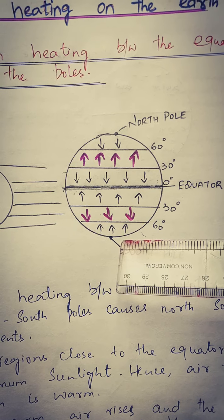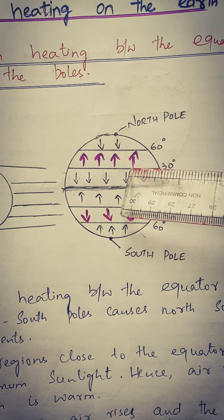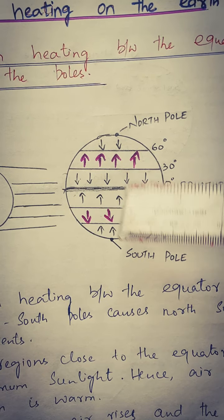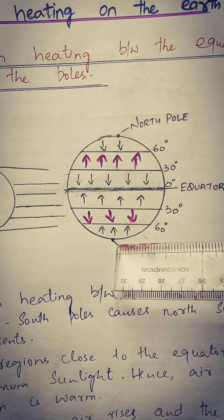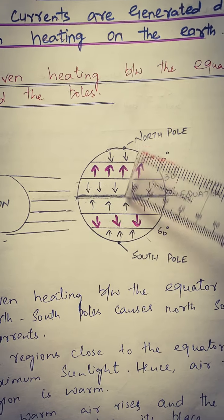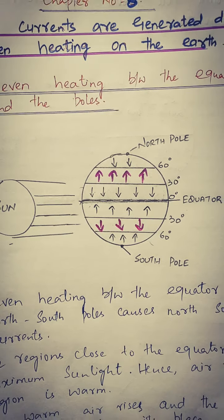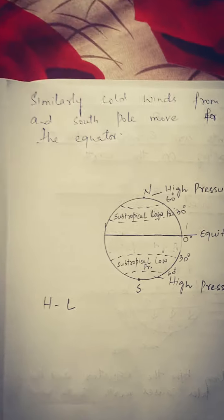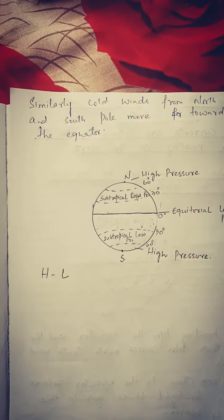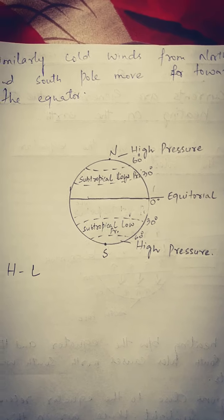Humne kal bhi padha ke warm air rise up karti hai — wo upar ki taraf jaati hai. Equator ke paas jo garam hawa hai yeh upar ki taraf ja rahi hai, 0 to 30 degree ke beech mein ho ke 30 to 60 degree ke beech mein. Aur jo north aur south pole ke paas thandi hawa hai, yeh equator ki taraf aa rahi hai. Is se wind current exchange ho jaati hai, aur isi se wind current between the north and south pole generate ho jaati hai. Similarly, cold winds from north and south pole move towards the equator.